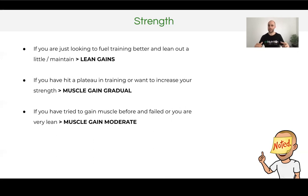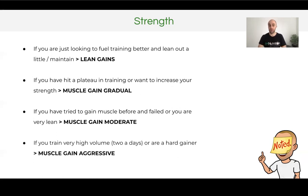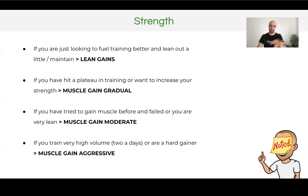If you've tried to gain muscle before and failed, or you're very lean and want to gain strength and put on lean muscle, muscle gain moderate is where you want to be. This is where we start to put on a little bit of mass and size, not just focusing on fueling performance. If you're training at very high volume, doing regular two-a-days, or you're a hard gainer who has really struggled to put on muscle or size, then muscle gain aggressive is what you need. This is really crucial — you need to marry the nutrition to the correct training stimulus. To gain muscle and strength, the training stimulus has got to be correct.